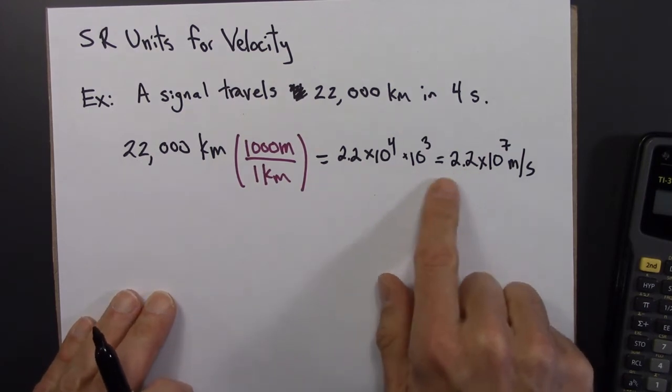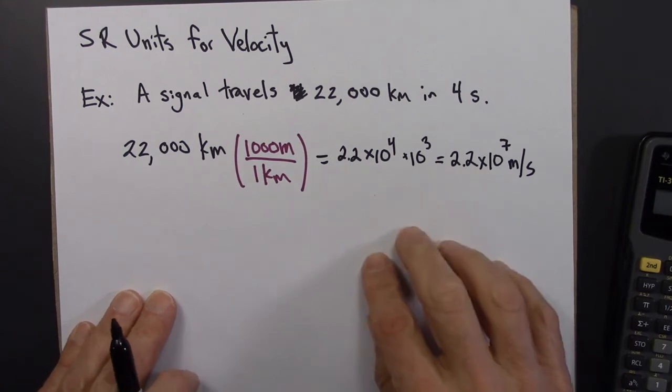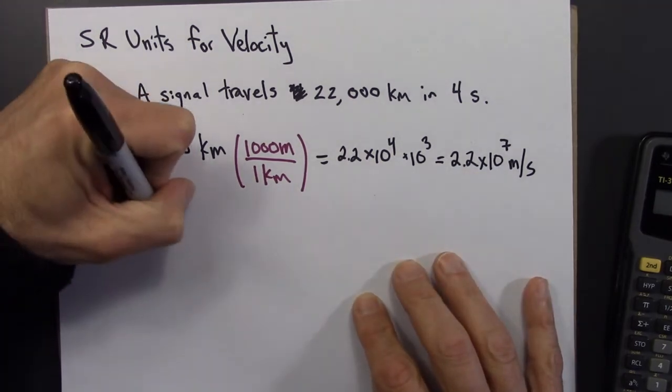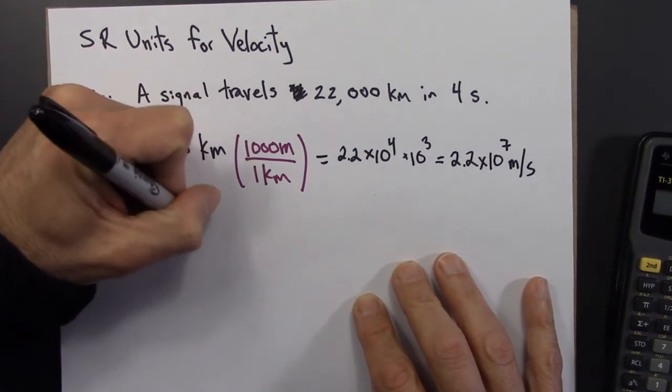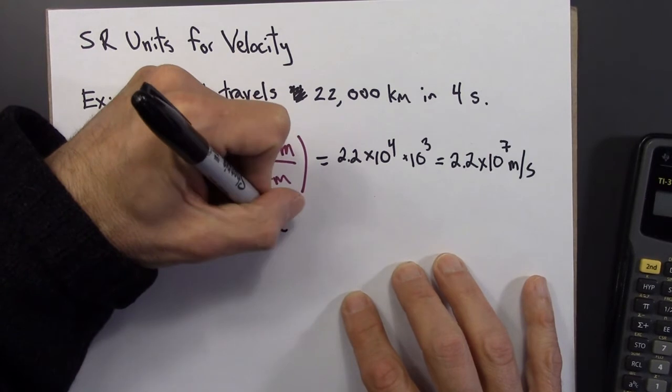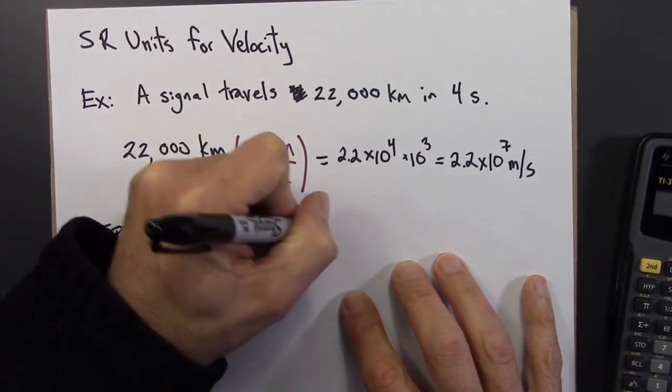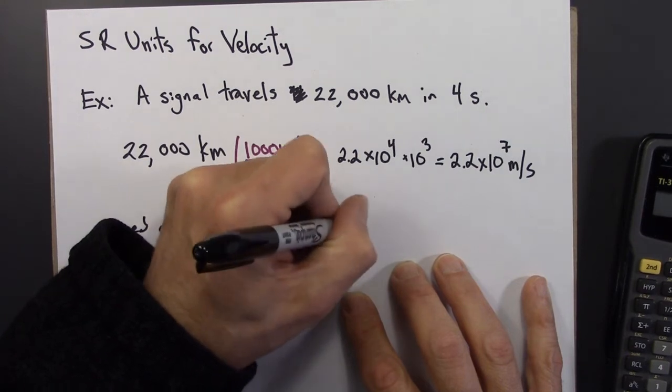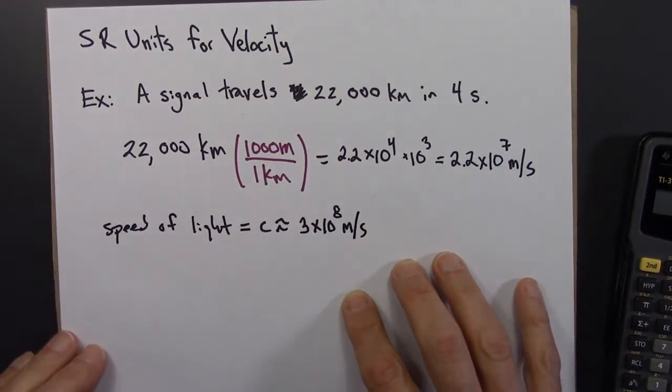What I want to do now is express this as a fraction of the speed of light. So recall that the speed of light, abbreviated C, is about 3 times 10 to the 8th meters per second.